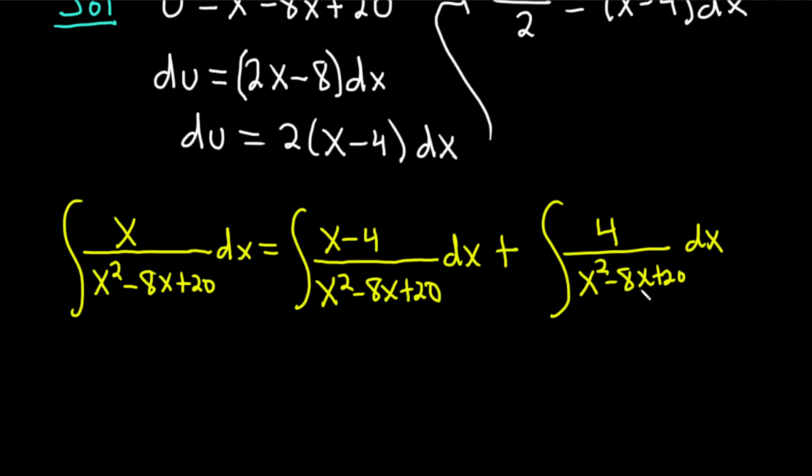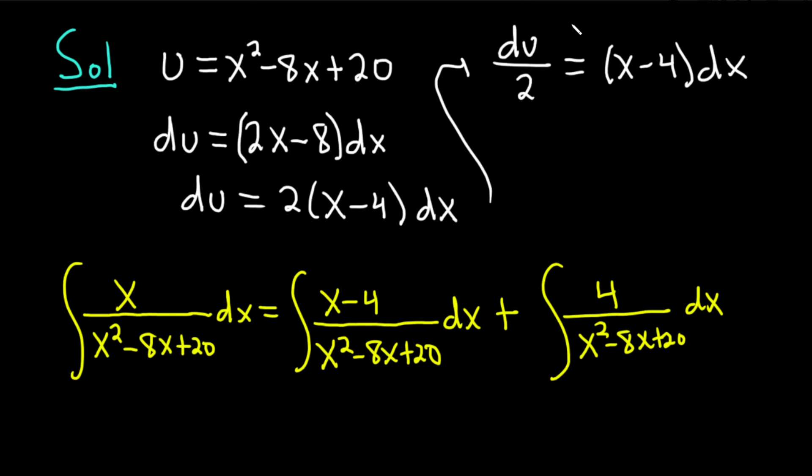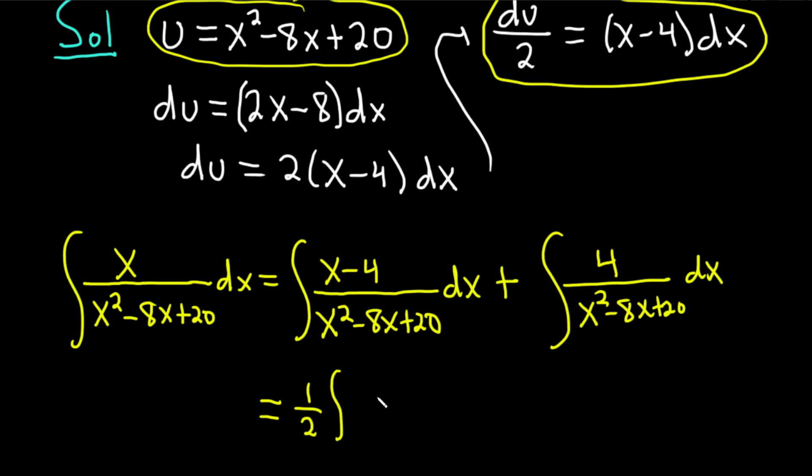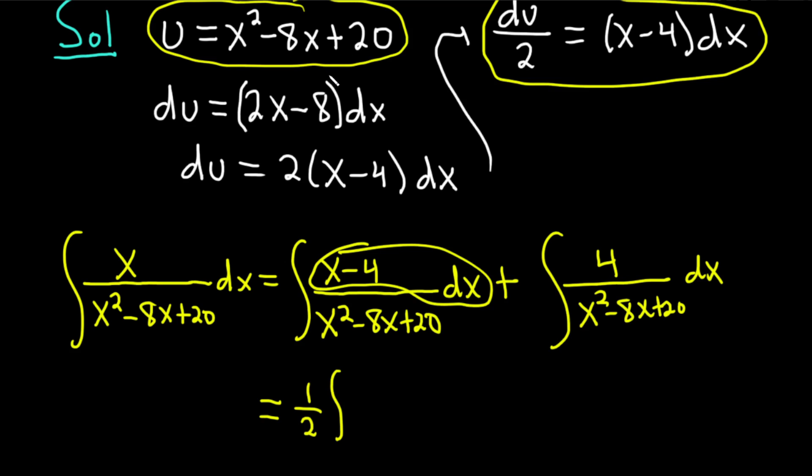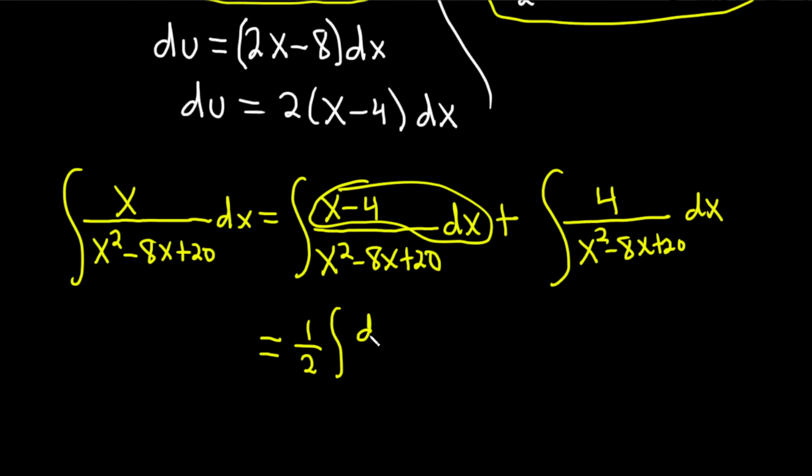We're going to have to do something else with this. I'm thinking we can complete the square, and this will be some type of arc tangent, so we'll be able to do this, and then we can do this with the substitution. Our substitution is here, du over 2 is x minus 4 dx, and u is equal to x squared minus 8x plus 20. So we can go ahead and apply that now to this first integral right away. This is equal to, I'm going to pull out the 1 half, so 1 half integral du over u.